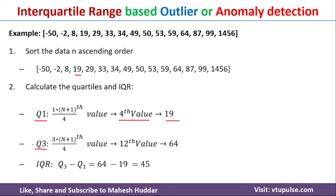Q3 is calculated using the formula: 3 times (n+1) divided by 4. Since (n+1)/4 equals 4, we multiply 4 by 3 to get 12. So Q3 is the 12th value in the given dataset. Counting to the 12th value gives us 64, so Q3 is 64.